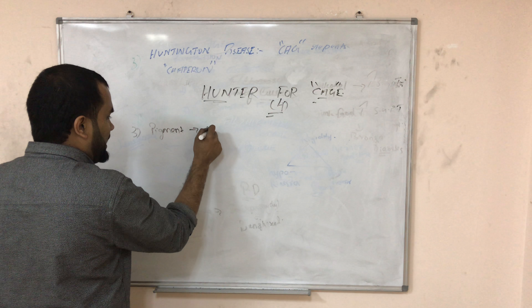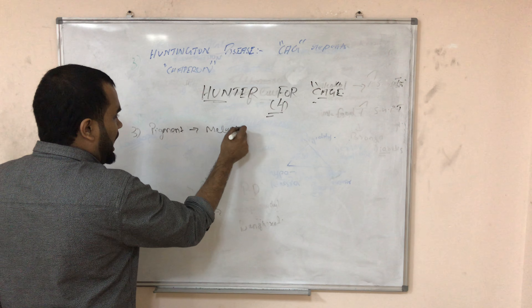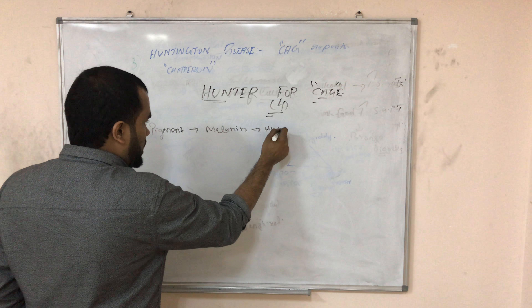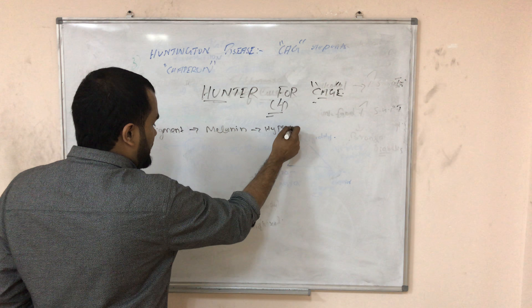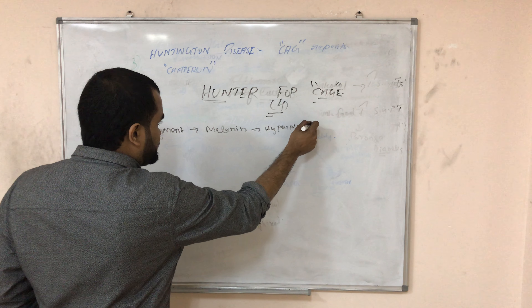There are many pigments. The normal skin pigment is melanin, and you can have hyperpigmentation when there is excess melanin.